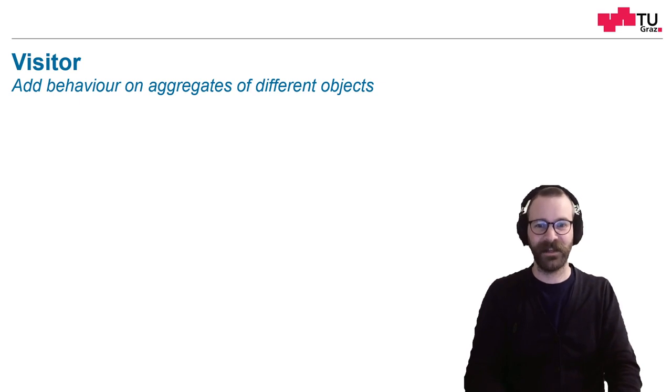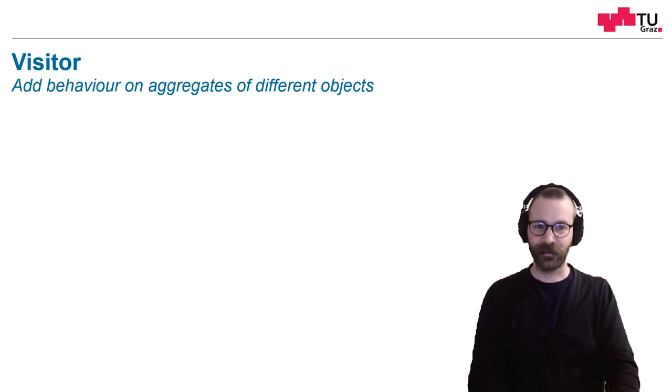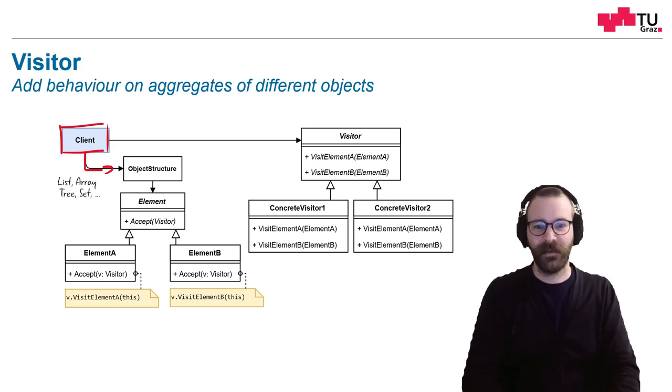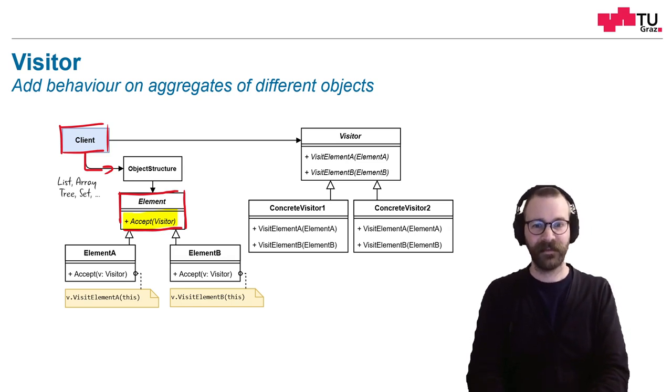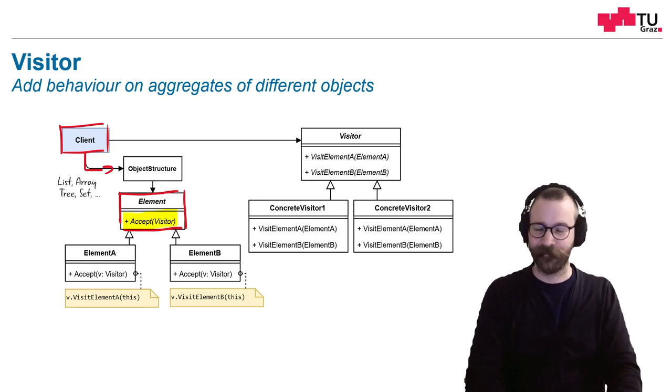We want to add behavior based on the object type in a whole list of objects. We, as a client, are working with some aggregate. This could mean a list, an array, a tree or set, whatever. The important thing is here, we want to apply some functionality to our elements and for this, we have to implement this accept method. And this accept method just takes a visitor and applies it to itself.